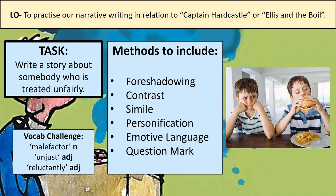In your workbook you've also got the vocabulary challenge and the definitions. The word 'malefactor' means a bad person — a noun. You could say: 'The malefactor drew closer to me.' You've also got the adjective 'unjust,' which means to be unfair. And the adverb 'reluctantly' — to do something reluctantly means without wanting to. Think about those techniques and try to tick them off and include them as you go. You'll have some time now to plan your use of writer's methods, then you can tick them off as you write your story and include them.